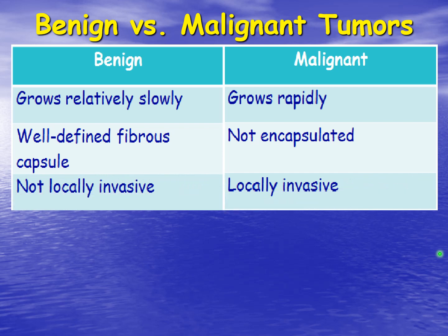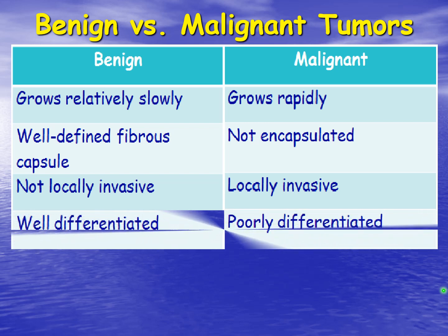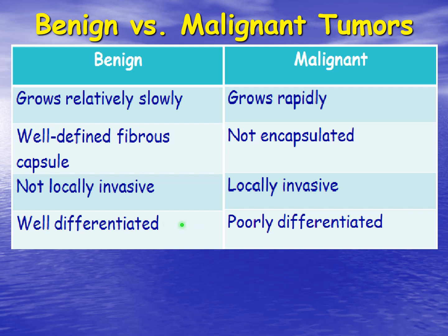Benign tumors tend to not be locally invasive, partly because of the fibrous connective tissue capsule, whereas malignant tumors tend to invade very locally. Benign tumors tend to be well differentiated — meaning most cells, even though they are cancer cells, are a fairly normal population. They look alike, tend to be the same size, and nuclei tend to be the same. Malignant tumor cells are very poorly differentiated — they look nothing like the original cells, don't look like each other, and tend to be different sizes.